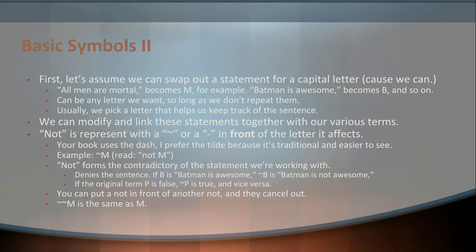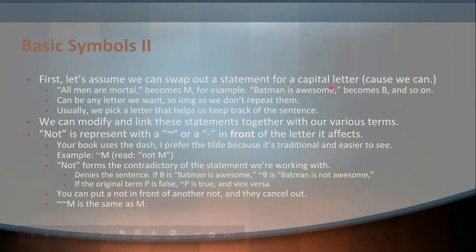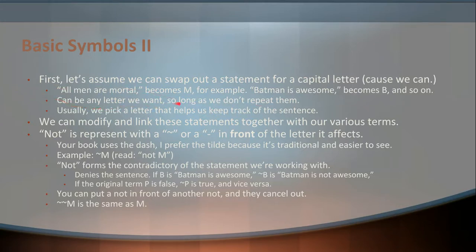Just like we did with categorical logic, we can swap out a statement for a capital letter whenever we work out these things, so we're not just making massive paragraphs of text. So if we have the statement 'all men are mortal,' we can just swap it out for the letter M. We can say 'Batman is awesome' and swap it out for a B, and so on. We can use any letter we like. Traditionally, we use capital letters just to keep things clear as to what's a variable. We can use any letter we want so long as we don't repeat them within the same argument, and traditionally we use a letter that helps us keep track of that sentence.